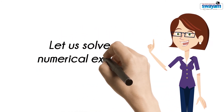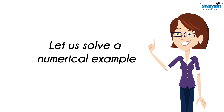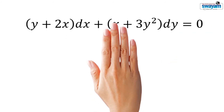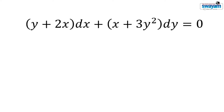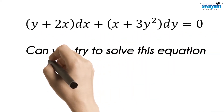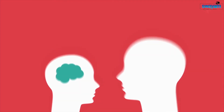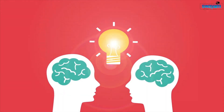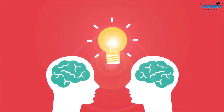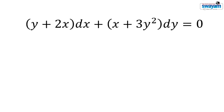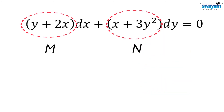Now, let us try to solve an exact equation using a numerical example. Considering the given equation with the general form of an exact equation, we have y plus 2x is equal to M, and x plus 3y squared is equal to N.